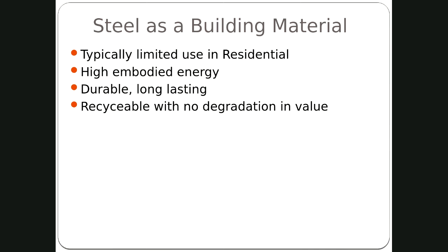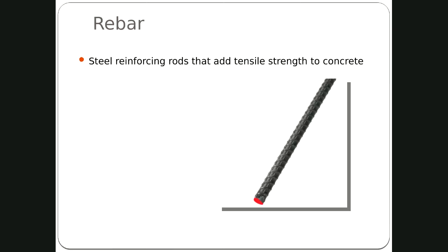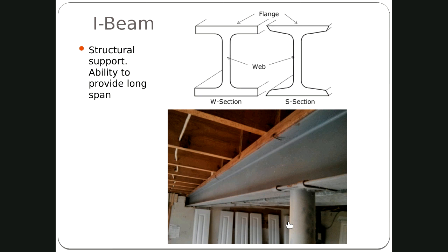Steel is not used much in residential buildings. It has high embodied energy but is very durable and recyclable. Rebar is used to add strength to concrete. Steel beams — an S-section has a curve on it, a W-section has straight edges — can span longer distances for heavier loads, and you see them more in commercial buildings and residential basements supporting the first floor.